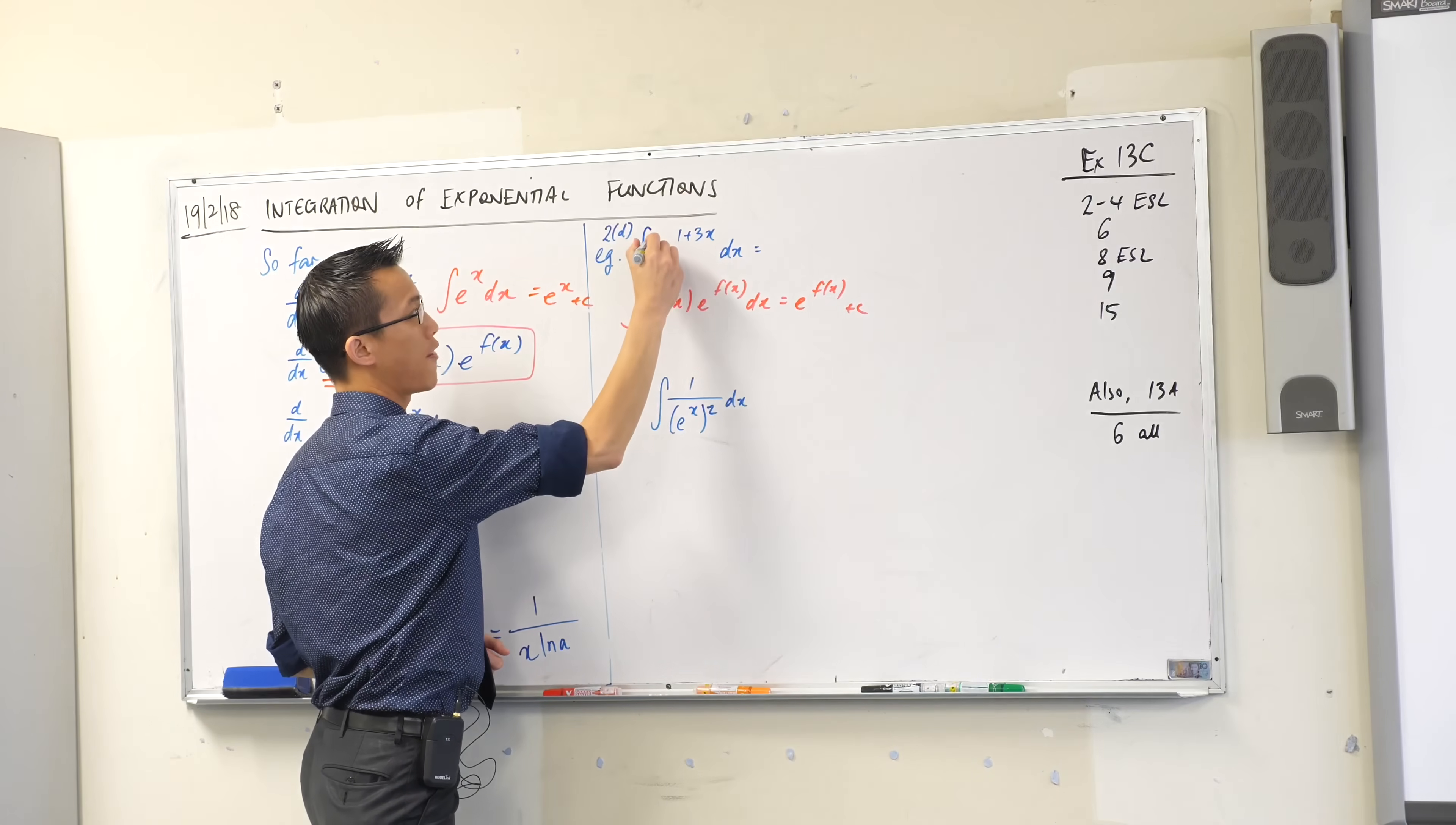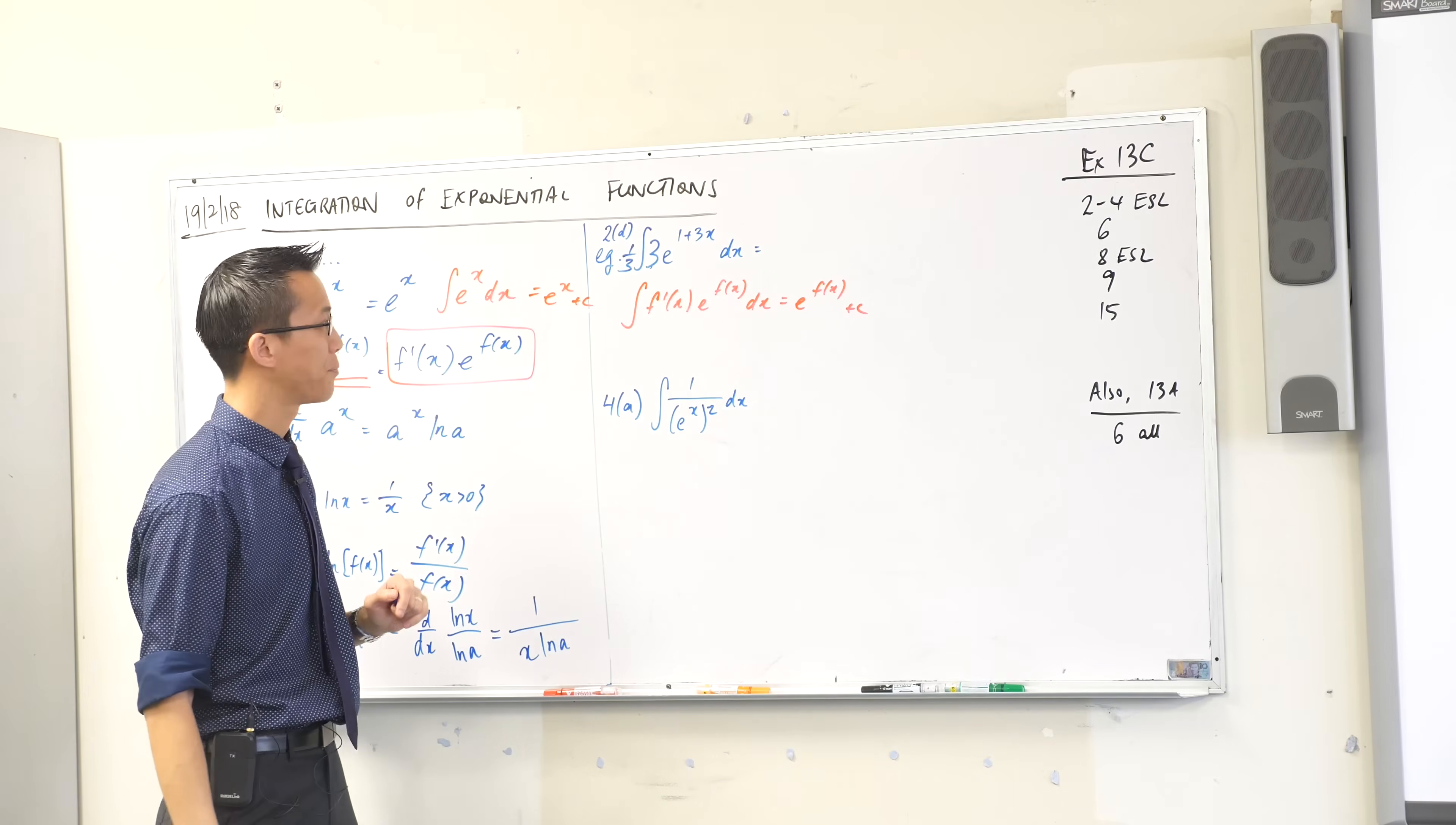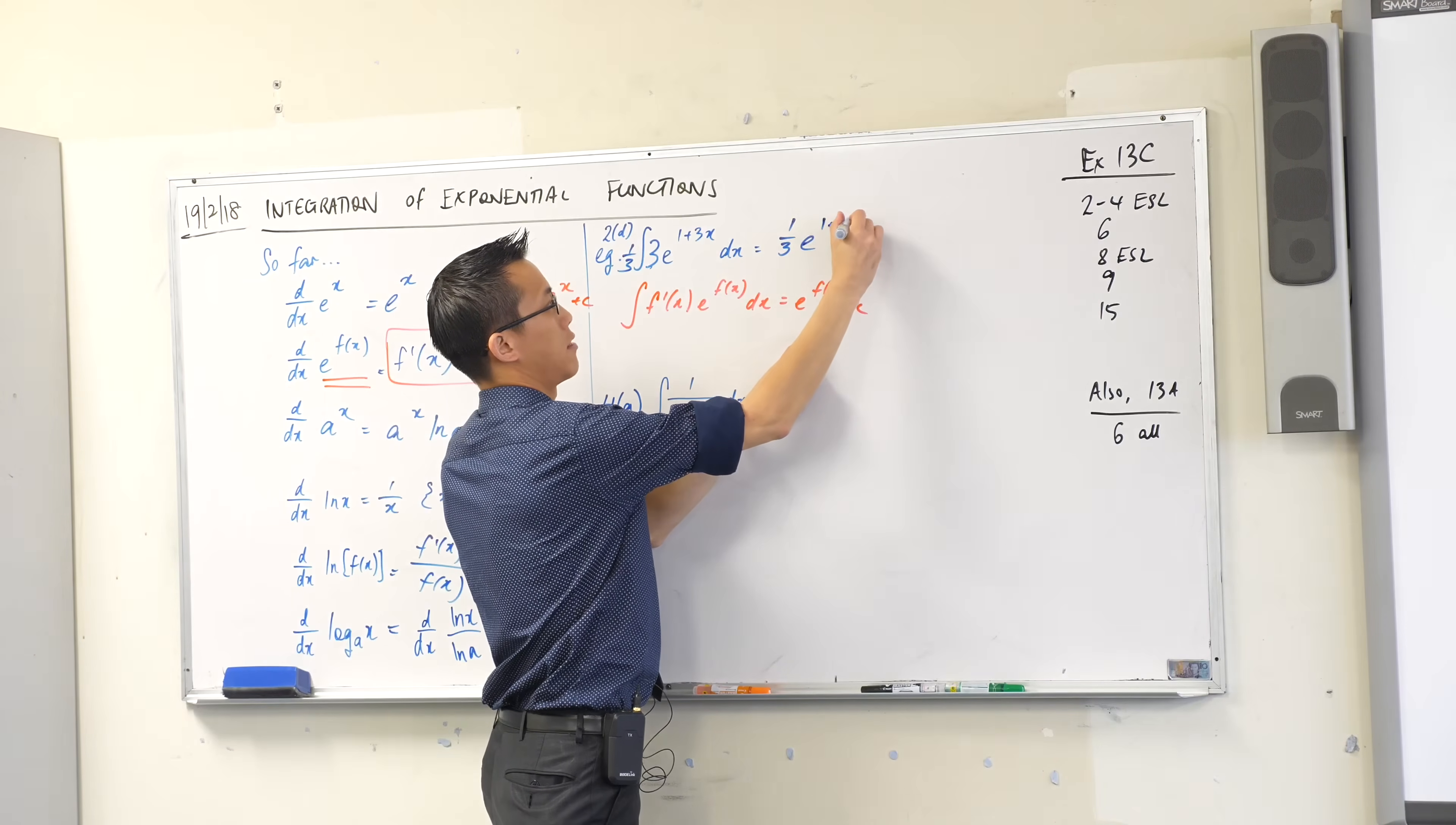So if I want 3, all I have to do is compensate by dividing by 3 out the front. Is that okay? So I've done this in order to have f dash e to the f in the inside. That's the thing I want to integrate. That's just going to be equal to this. So the 1 third is still hanging out the front because it's not part of the integration. And then what do I end with? e to the f. Does that make sense?